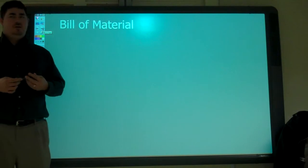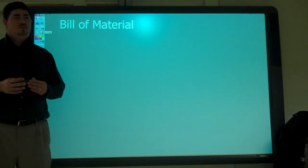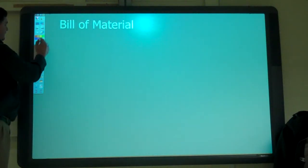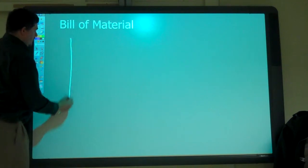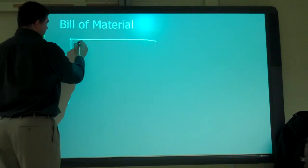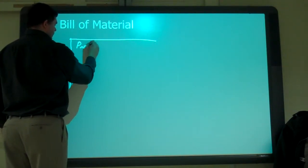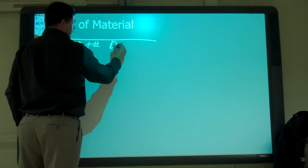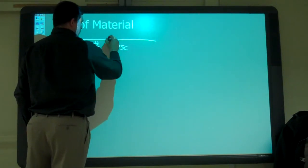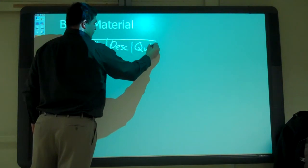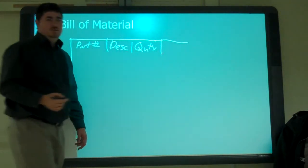First thing, we need to have a good bill of materials. What is a bill of materials? The list of all the things needed to make that assembly. It's going to be a table with the part number, description, quantity.